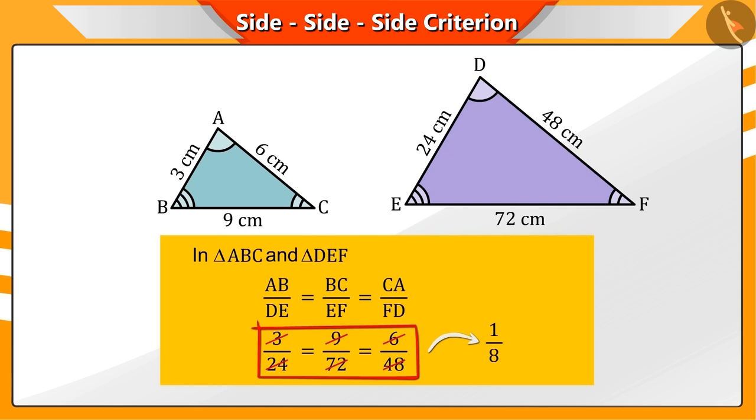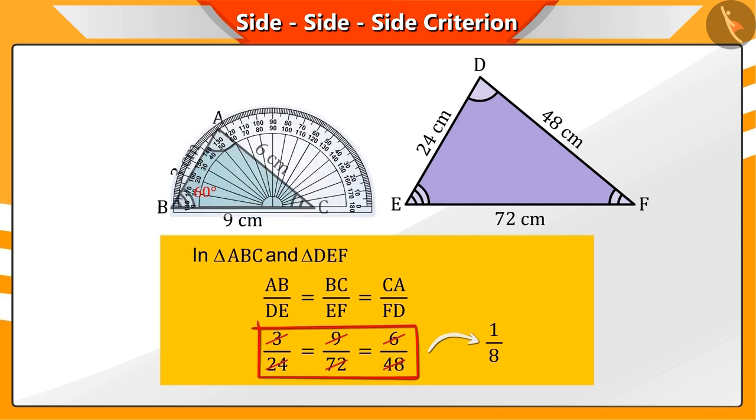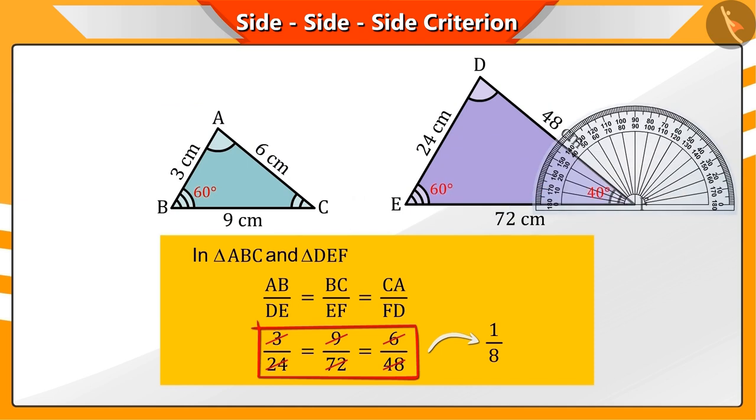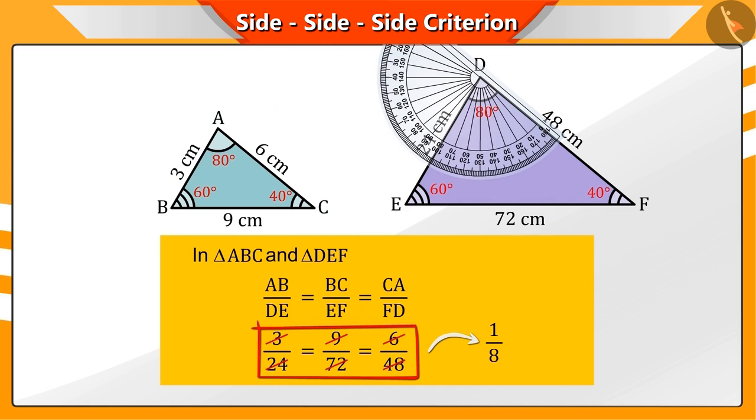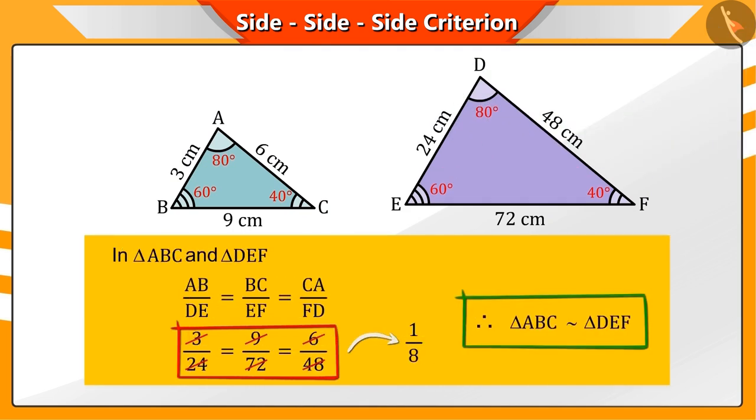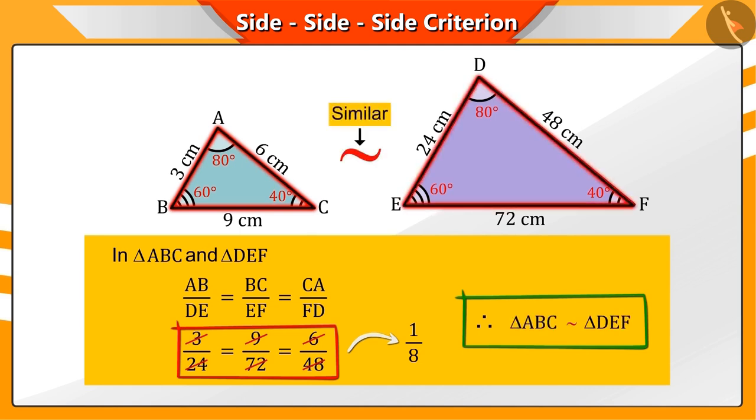You are absolutely correct. The ratios of the corresponding sides of both the triangles are 1 by 8. And if we look at the angles, then you will see that the corresponding angles of these triangles are also equal. This way, we can say that triangles ABC and DEF are also similar.